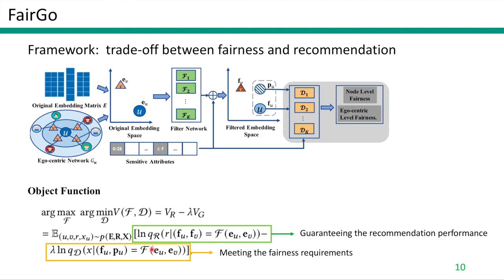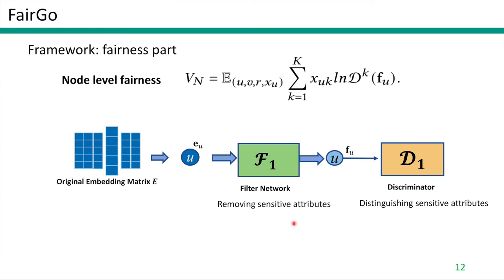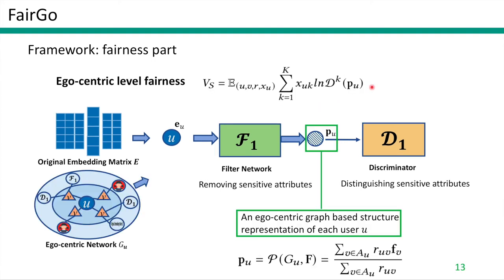Given the sensitive attributes, we design two-level functions to consider fairness in the filtered embedding space. First, the direct idea is node-level fairness: we design the value function based on user embedding fu. Second, we design ego-central fairness. We seek to obtain an ego-central graph-based structural representation of each user, pu. pu is the output of the patch network that summarizes the user from her central graph structure. For example, pu is the average filtered embedding of the local first-order neighbors — a simple implementation of the ego-central graph summary structure.